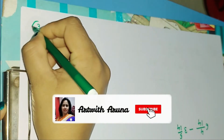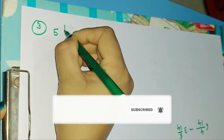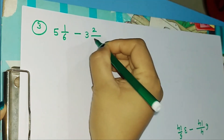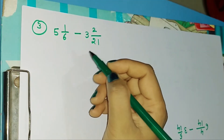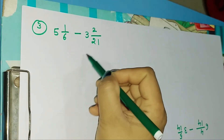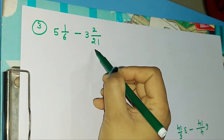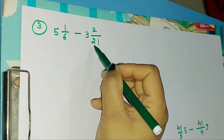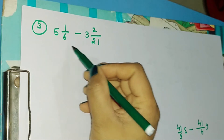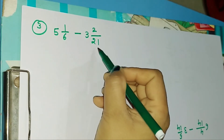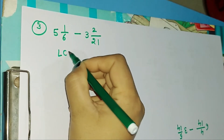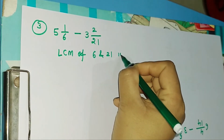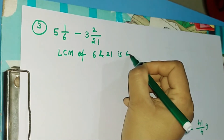Our third example is 5 1/6 minus 3 2/21. Here you can see that both fractions have two different denominators. So to solve this question, first of all we need to make the denominators the same. We need to take the LCM of 6 and 21.